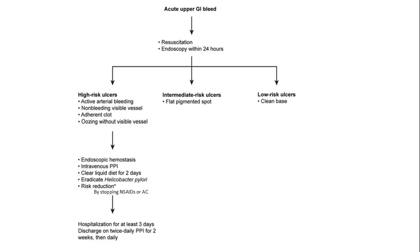In a patient presenting with an acute upper GI bleed, initial management involves resuscitation and performing endoscopy within 24 hours. Following endoscopy, ulcers are stratified into three risk categories. High-risk ulcers include active bleeding, non-bleeding visible vessel, or adherent clot, and management includes endoscopic hemostasis.